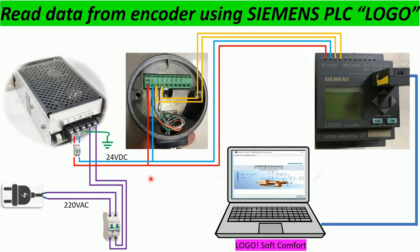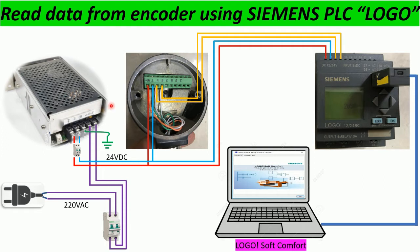First, I have a power plug at 220 volt AC connected to a circuit breaker and supply to a power supply. For this power supply, the input is 220 volt AC and the output is 24 volt DC. Here is the connection from the power supply to the PLC Siemens Logo at 24 volt DC. For the encoder, we supply 24 volt DC, and this is the signal from the encoder to the input of the PLC Logo.